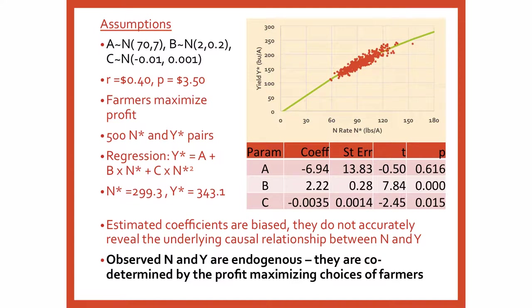Well, here's what you're going to get. There's your nitrogen rate, there's your yield, there's the cloud of farmers. Here's what you get if you do that regression: complete garbage. Not at all what we know is the underlying response curve — it's something completely different. Farmers got the same prices and they're all maximizing profit. We drew 500 of these pairs, ran that regression, and got an optimal nitrogen rate of 300 pounds and yield of 343 bushels. That isn't right — we know that's not right. That's because these are observational data generated by a process of human behavior; they are not experimentally controlled. The observed nitrogen and yield are endogenous — co-determined by the profit-maximizing choices of farmers. They don't accurately reveal the underlying causal relationship. We all know nitrogen causes yield to go up, but this isn't how you get at that.